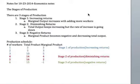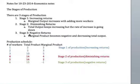Stage one is increasing returns — marginal output increases with each additional worker. Stage two is diminishing returns, which means total output keeps increasing but the rate of increase is going down as you add an additional worker. Stage three is negative returns — marginal product becomes negative and total output decreases, which is something everybody tries to avoid.